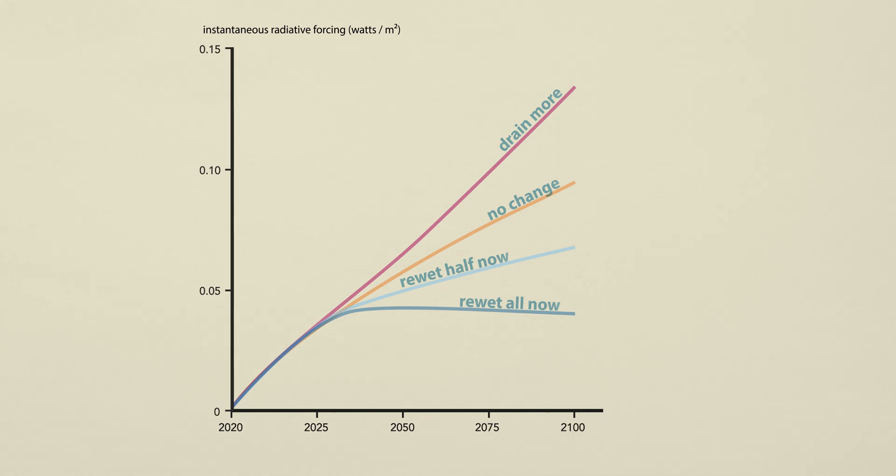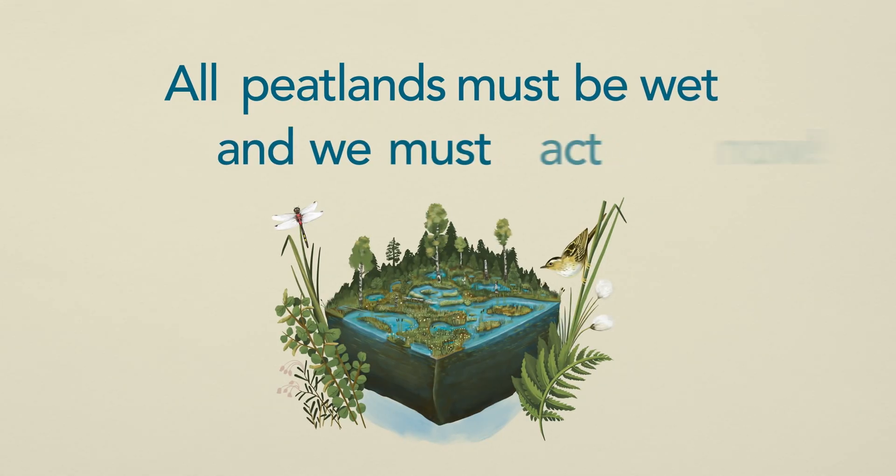As long as peatlands remain drained, they release carbon dioxide into the atmosphere. Postponing re-wetting therefore means allowing more long-lived carbon dioxide to enter the atmosphere, shifting a potential cooling effect further into the future. All peatlands must be wet, and we must act now.